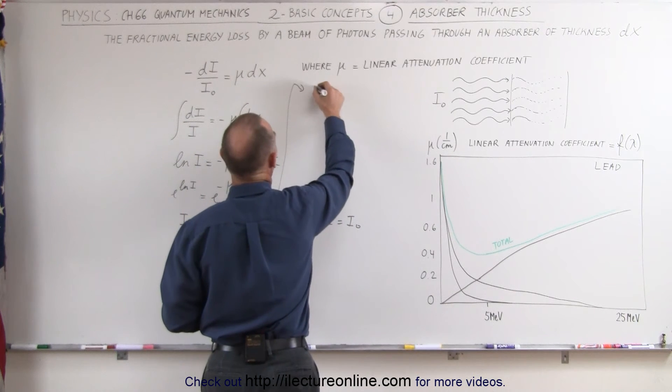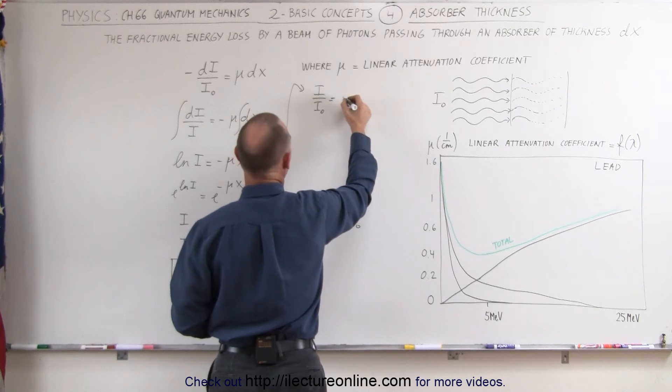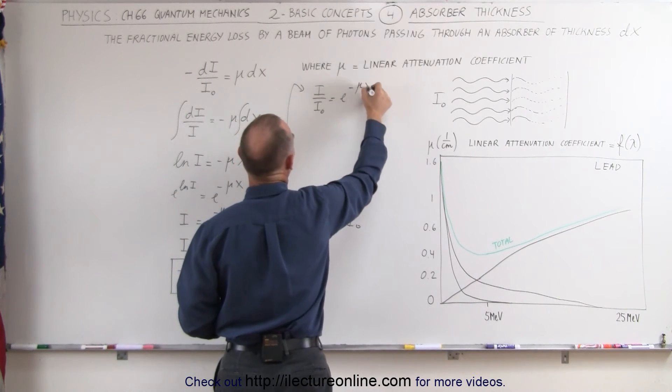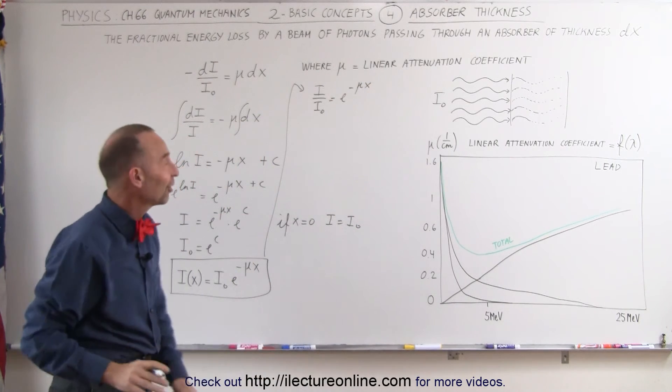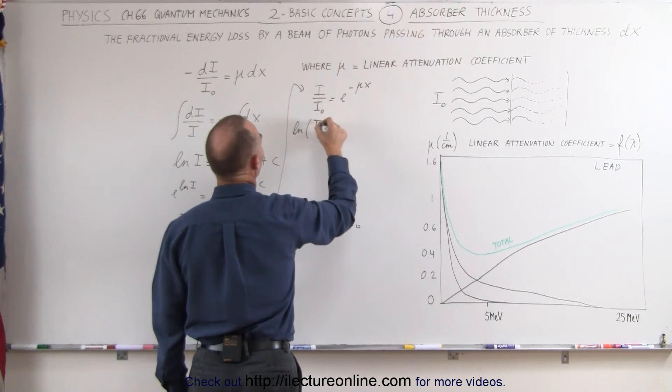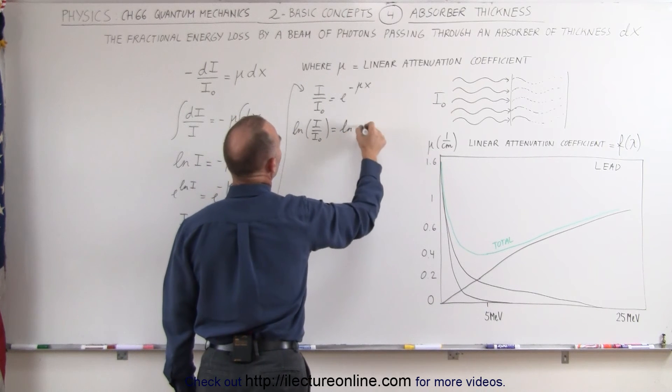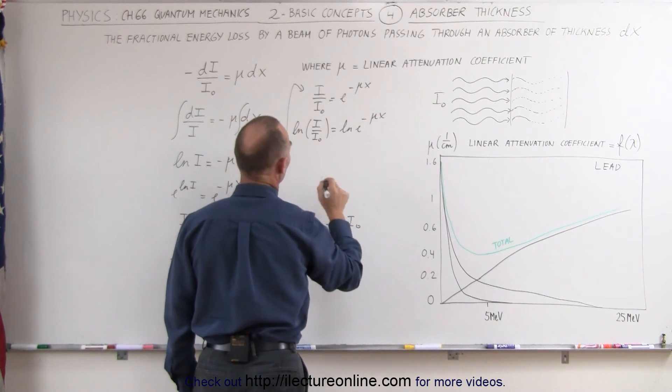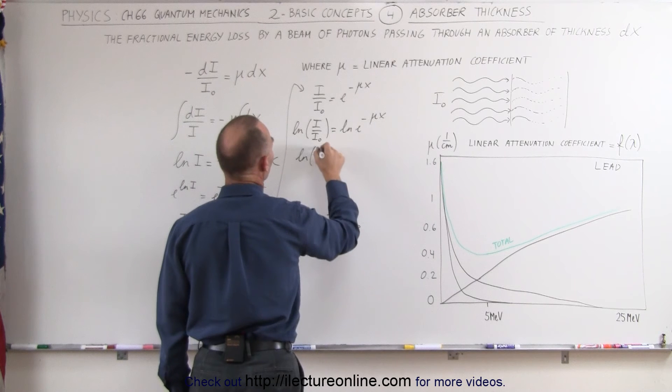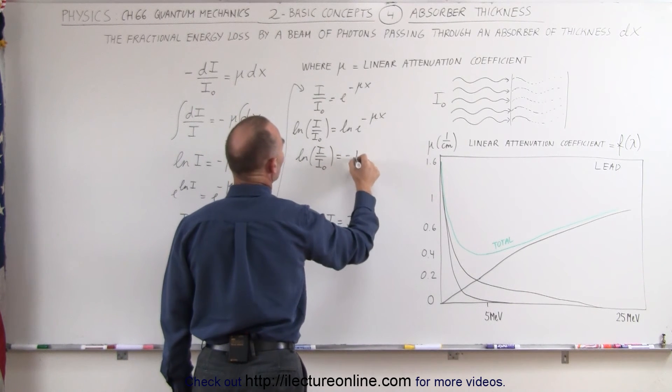So I'm going to write this as I divided by I sub naught is equal to e to the minus μ times x. Now I'm going to take the natural log of both sides, so the natural log of I divided by I sub naught is equal to the natural log of e to the minus μ times x. Which means that the natural log of I divided by I sub naught is equal to minus μ times x.